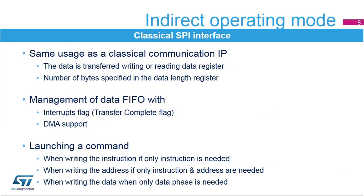The Quad SPI memory interface used in indirect operating mode behaves like a classical SPI interface. Transferred data goes through the data register with FIFO. Data exchanges are driven by software or by DMA using related interrupt flags in the Quad SPI status registers. Each command is launched by writing the instruction, address, or data depending on the instruction context.